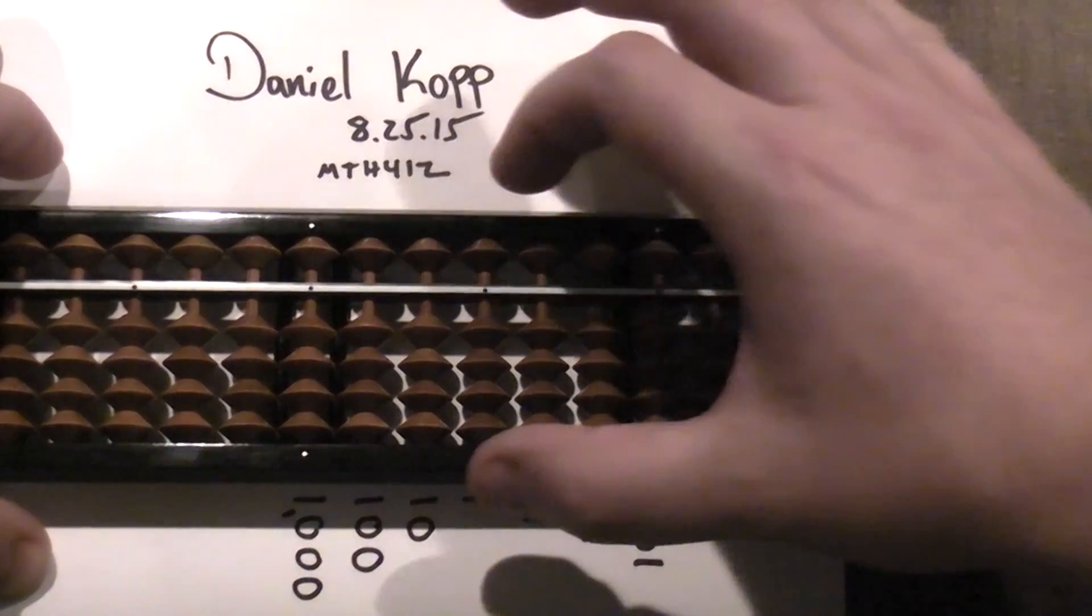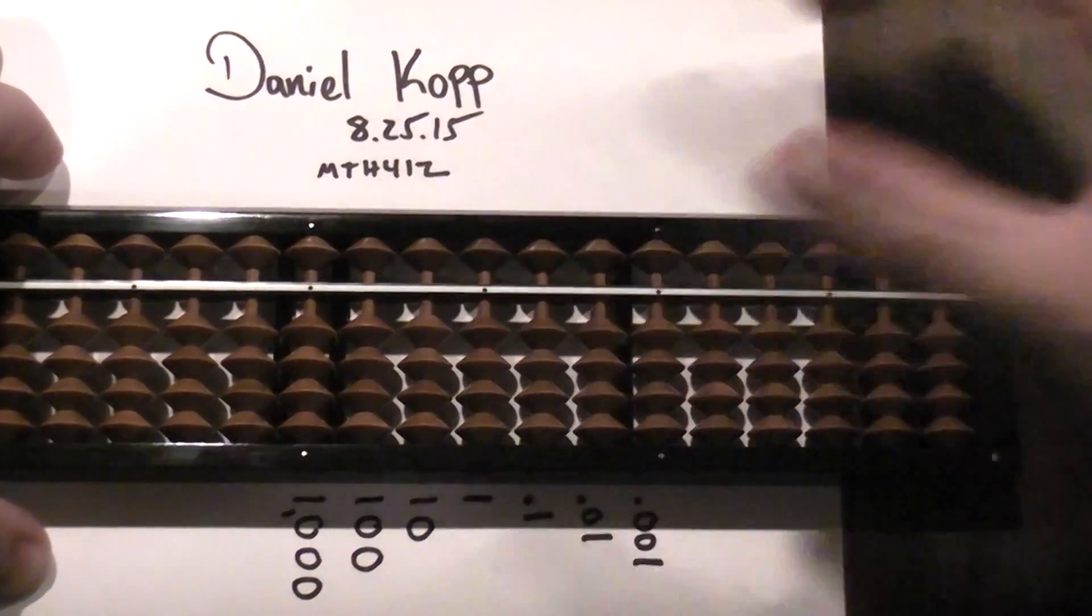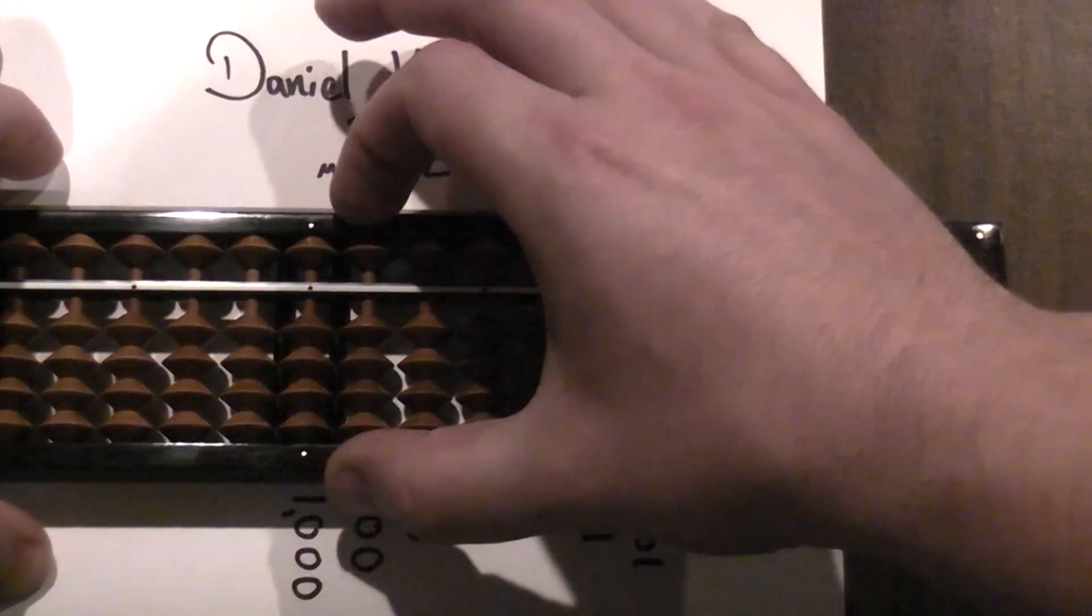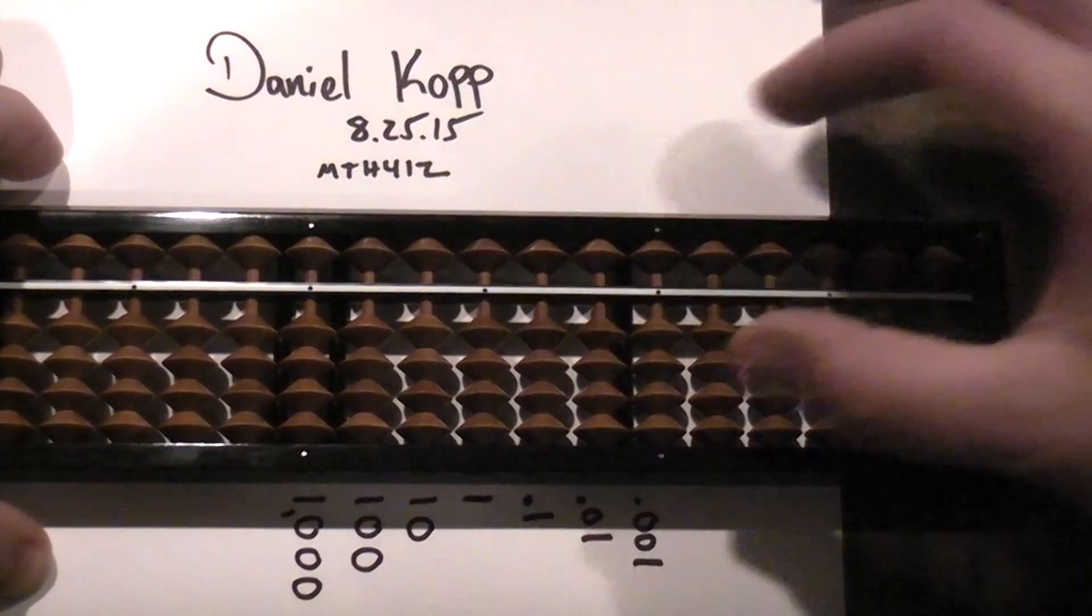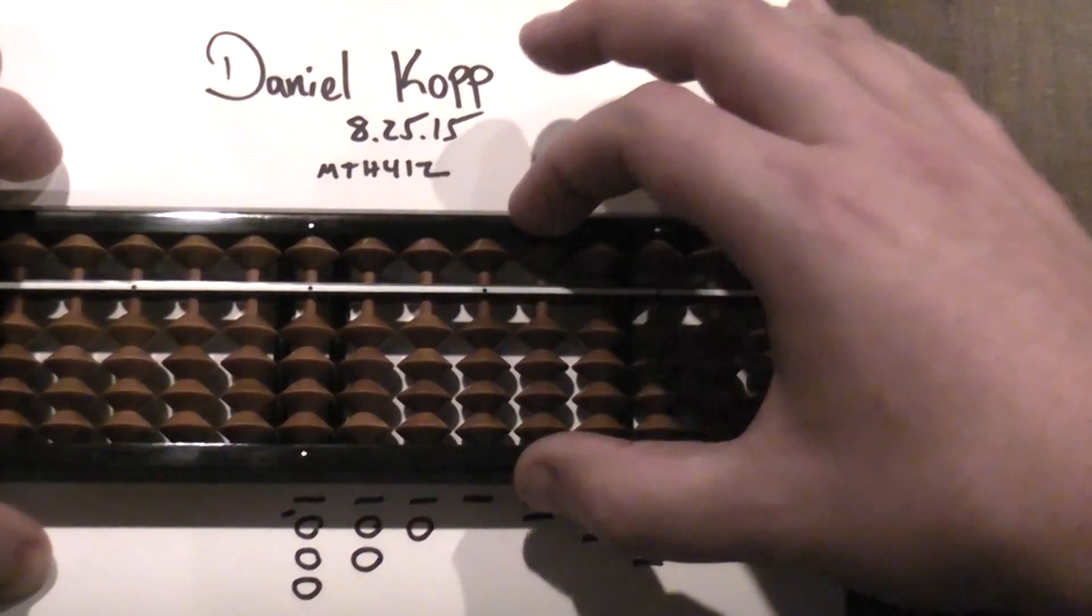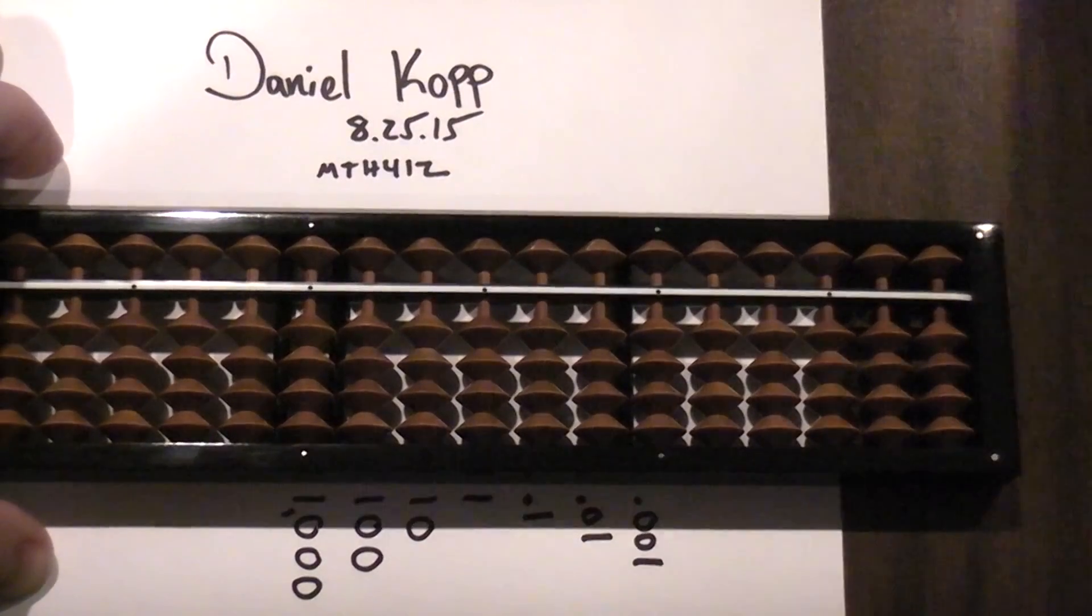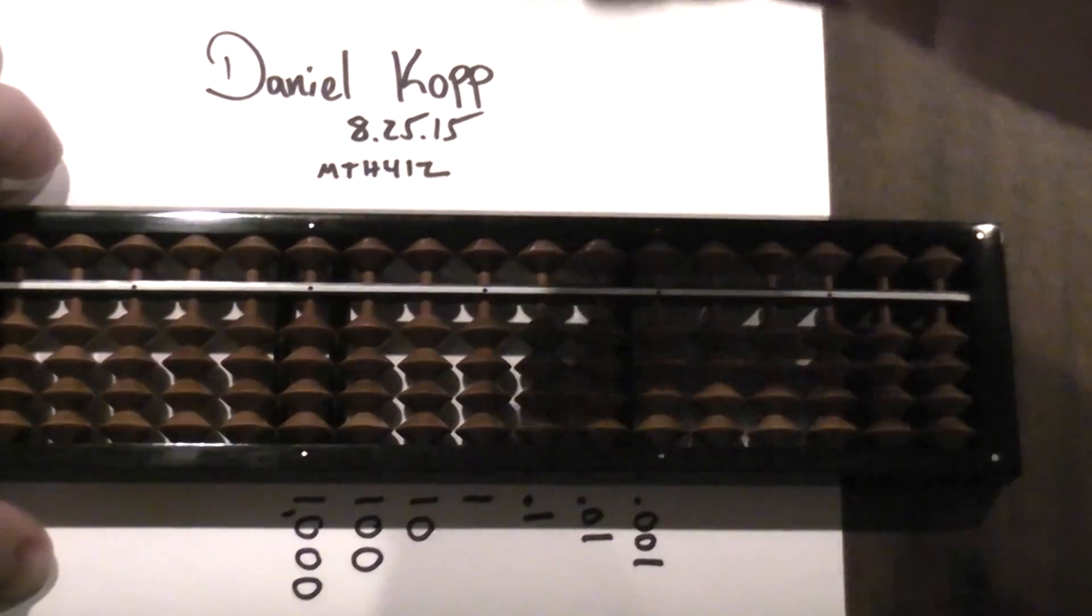The first thing you're going to want to do is pick your ones column. I like to use this as my ones column. If this is my ones column, that means this is my tens column, my hundreds, my thousands. If this is my ones column, that means this is my tenths, hundredths, and thousandths. Now, how do we add one?